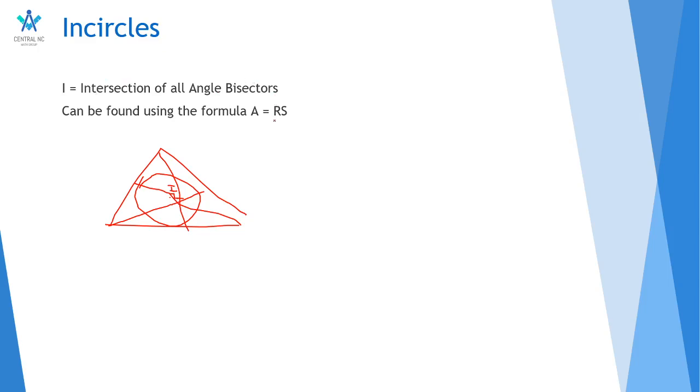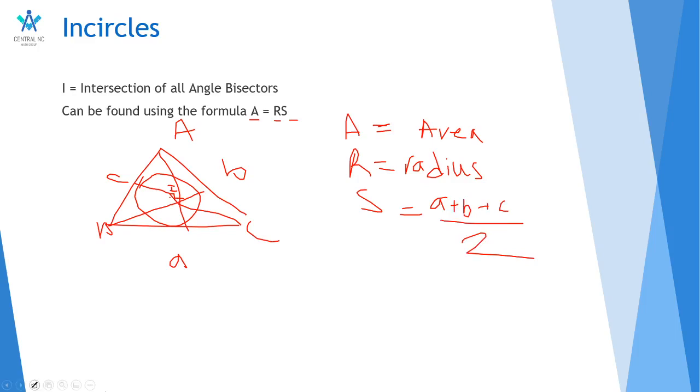So you can find the inradius, which is r, by knowing the area and the semi-perimeter. So the area of the triangle, A is equal to the area of the triangle, R is equal to the inradius. And S is equal to the semi-perimeter. So if I were to name this as a, b, c, this would be side a, side c, side b. And your perimeter is a plus b plus c. Your semi-perimeter is that divided by 2, a plus b plus c over 2.